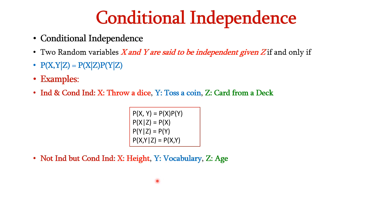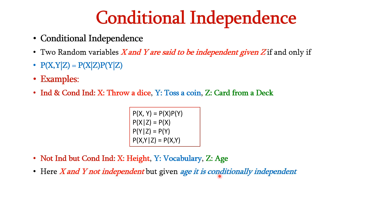Now let us see the example for not independent but conditionally independent. We have three events X, Y and Z: X is height, Y is vocabulary, and Z is age. X and Y are not independent because height might determine vocabulary — if a person is a child, the height might be short and the vocabulary might be poor. But given age, they are conditionally independent. When age is given, even though the person is short, the vocabulary doesn't depend on height.